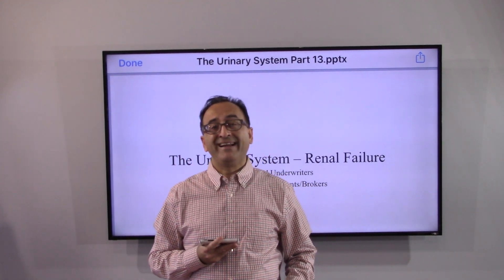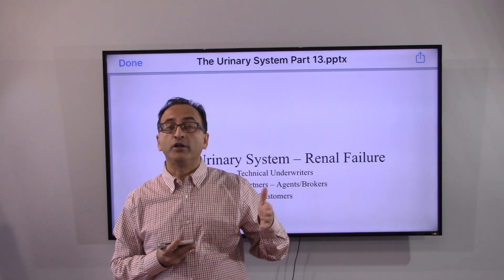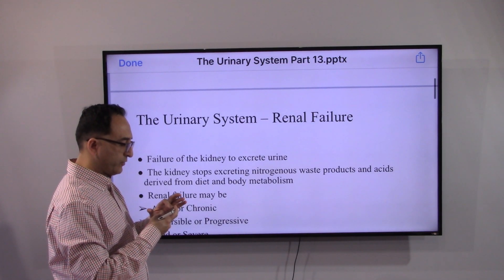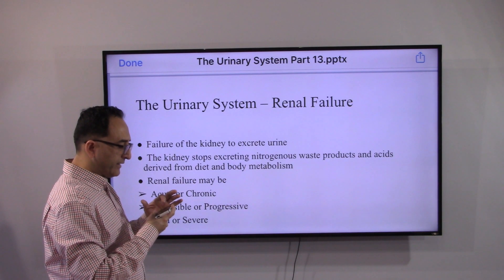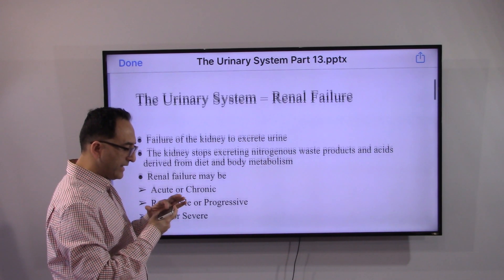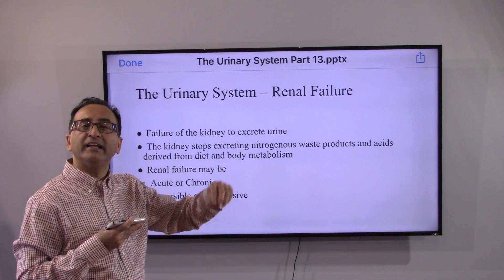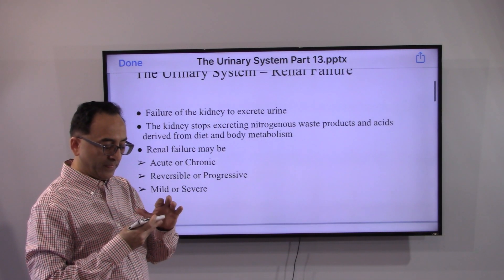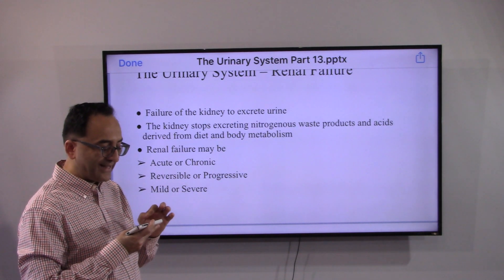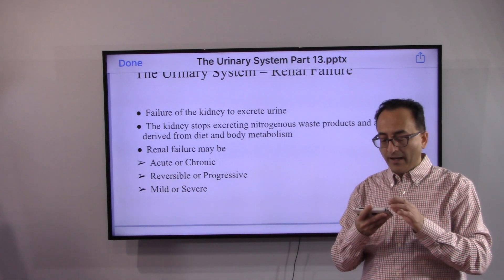Let's continue with the urinary system. In this video we will be looking at renal failure — what it is, whether it could be acute or chronic. Renal failure, as the name suggests, means the kidney is unable to or fails to do what the kidney normally does. Normally the kidney filters the blood, makes urine that leaves the body, and excretes nitrogenous waste products and acids derived from diet and body metabolism.